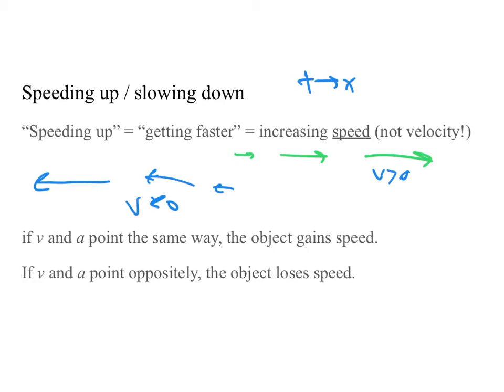So we have to remember that getting faster or getting slower refers to the speed. If the velocity and acceleration point in the same way, the object gains speed. And if the velocity and acceleration point oppositely, the object loses speed. And that's the best way to remember what the sign of acceleration means. If it's tending to make you go faster, then your acceleration has the same sign as your velocity. And vice versa.